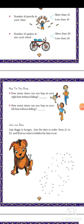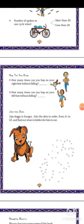Now another activity: Hop till you drop, page number 12. How many times can you hop on your right foot without falling? Try it and write how many you can do. Then how many times can you hop on your left foot without falling? Try it and write it there.